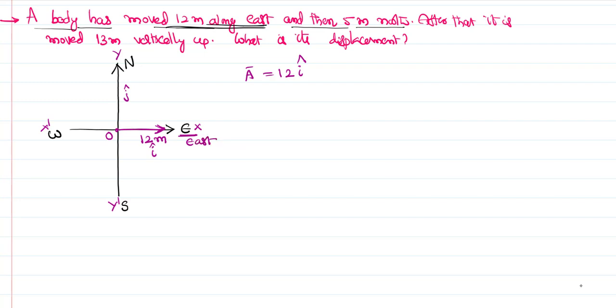Then it has moved 5 meters towards the north. That means from here it has moved like this, 5 meters towards the north. It's on the positive y-axis, so if it has to be represented like a vector, it shall be multiplied with a unit vector j-cap. So the second part of the displacement b-bar is 5 j-cap.